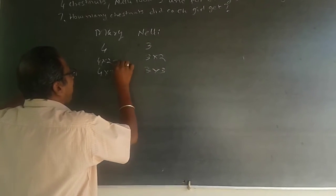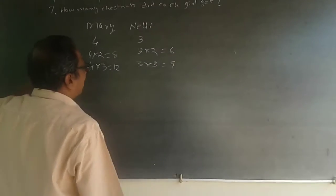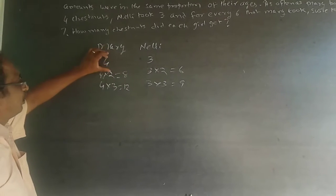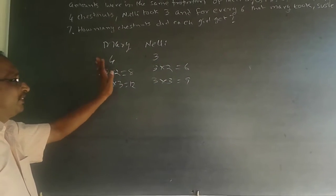So for every 8 she will take, she will take 6. For every 12 Mary takes, she will take 9, like this. I'm just wrapping it out. This is the way of doing it. The ratio will always be multiplied by the same number. It will always be maintained.